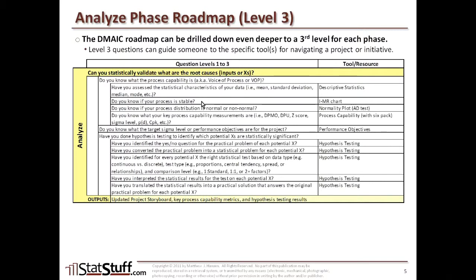Next, do you know if your process is stable? You might use an IMR chart to figure that out. Also, do you know if your process distribution is normal or non-normal? You would use a normality plot with the Anderson-Darling test to determine that. The last level three question here is: do you know your key process capability measurements — for example, DPMO (defects per million opportunities), DPU (defects per unit), Z-score, sigma level, percent effective, or CPK?